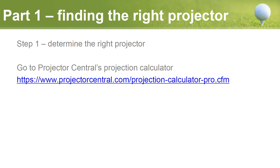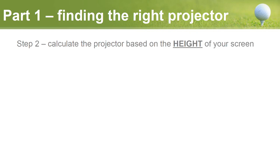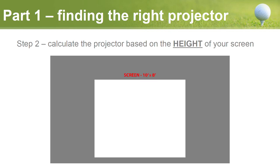One of the main things when determining which projector you want is to do the calculation based on the height of your screen, not the width. The reason I say height is that most screens won't actually be a 16:9 ratio. Most of the time you end up with a screen that's not as wide as a standard movie screen — you'll often see 10x9 or 10x8 screens, more along the lines of a 4:3 ratio. Use the height to determine which projector you want.